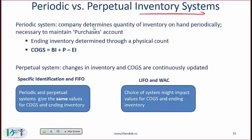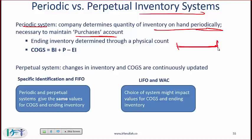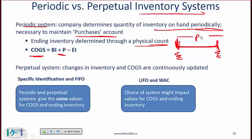Periodic versus perpetual inventory systems. With a periodic system, a company determines the quantity of inventory on hand periodically and maintains a purchases account to track everything it is purchasing. Ending inventory is determined through a physical count, and COGS equals beginning inventory plus purchases during the period minus ending inventory.